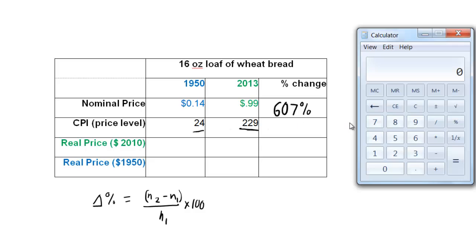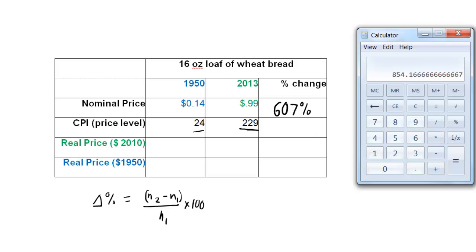Second number is 229, minus 24. 24, 205, divided by 24, 8.54, still have to multiply by 100, 854%. Oh, my goodness.